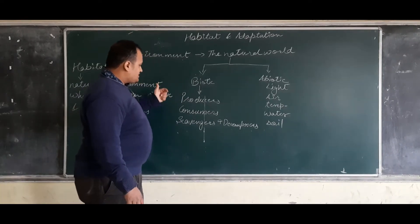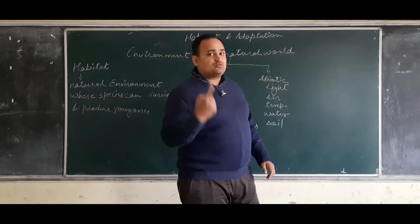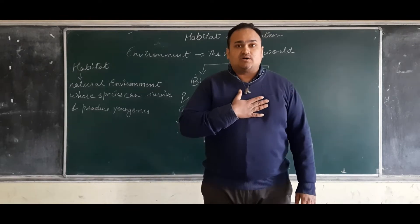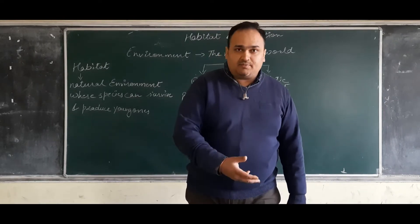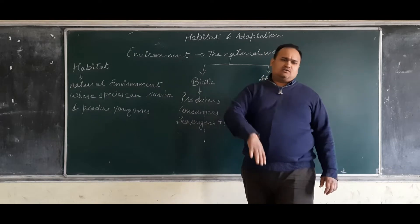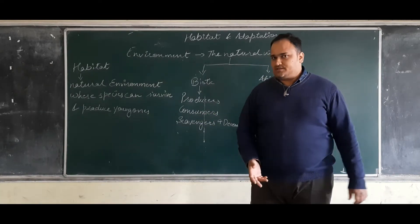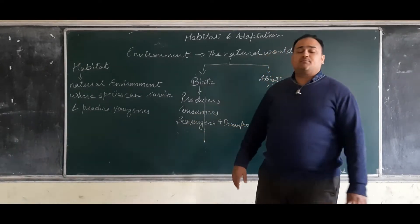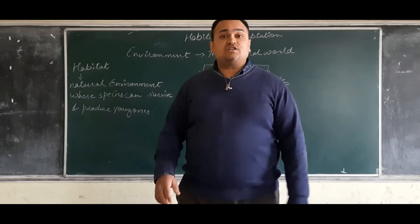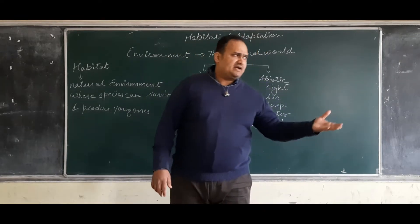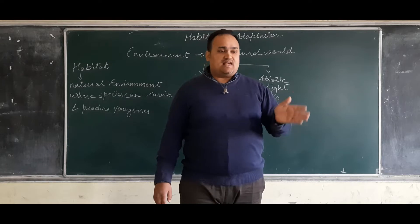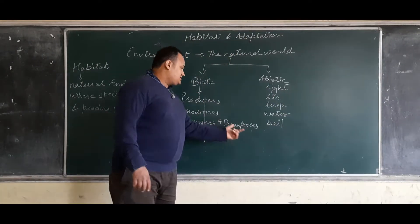We call it producers, consumers, scavengers and decomposers. Producers are plants which produce oxygen and food. All of us are consumers because we eat what plants produce - fruits, seeds. Scavengers and decomposers depend on dead and decaying organisms. For example, if a plant dies, bacteria or fungus will grow on it and convert it into humus which is healthy for the soil.